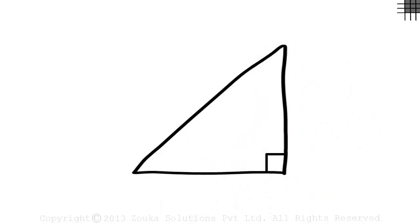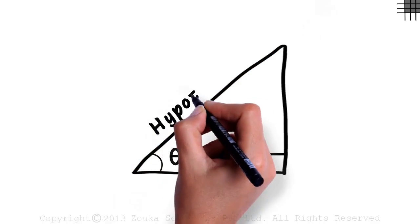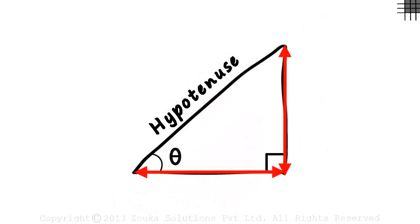We know that trigonometry generally deals with right triangles. Like this one. Let's assume this angle is theta. The side opposite to the right angle is called the hypotenuse. And the other two sides are named with respect to the position of this angle.